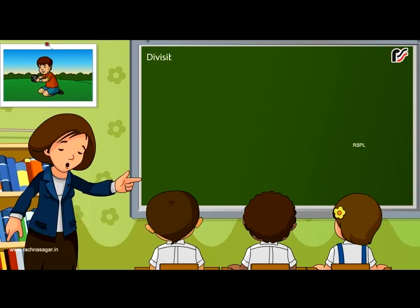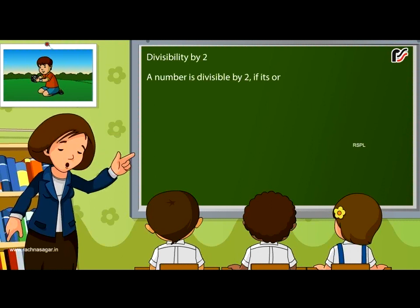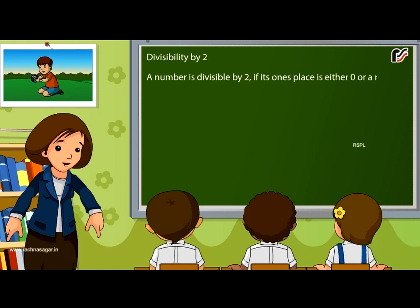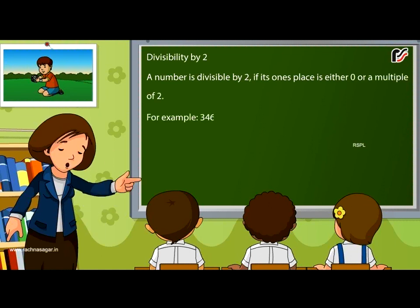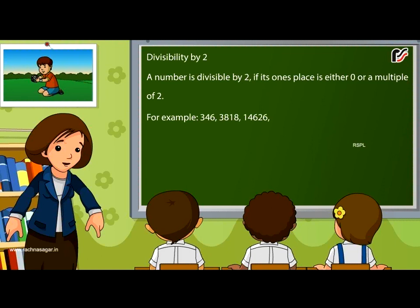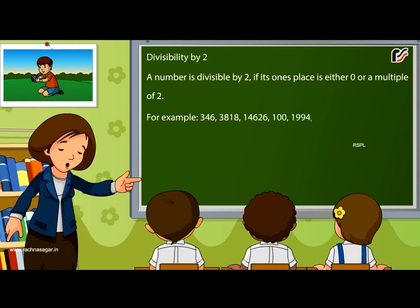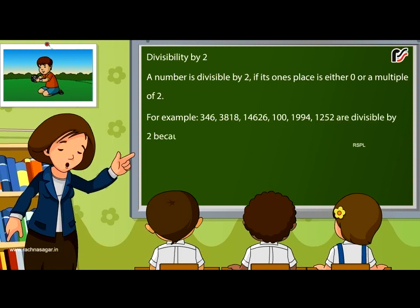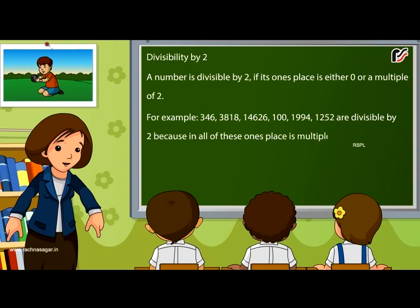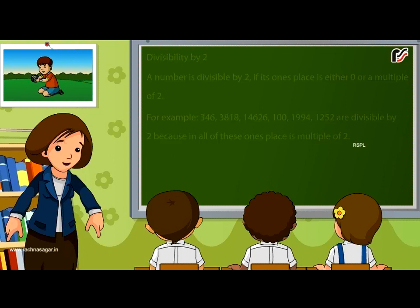Divisibility Tests. Divisibility by 2: A number is divisible by 2 if its 1's place is either 0 or a multiple of 2. For example, 346, 3818, 14626, 100, 1994, and 1252 are divisible by 2 because in all of these the 1's place is a multiple of 2.